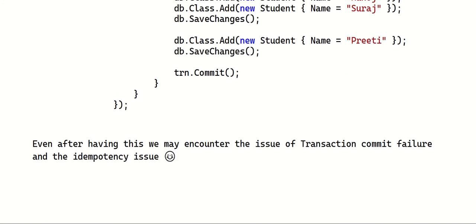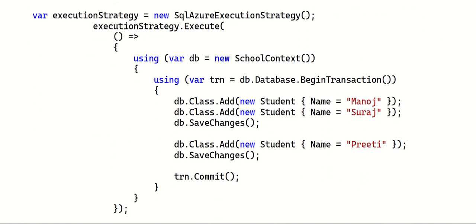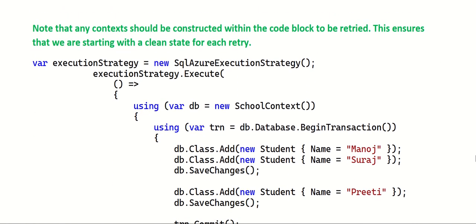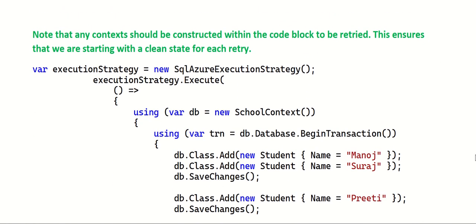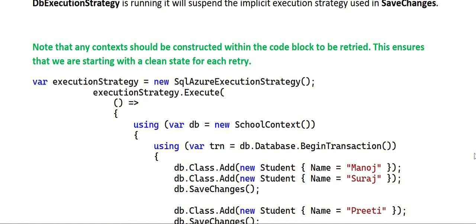There are still some challenges even after this — we may encounter transaction commit failure and idempotency issues. I'll explain how to avoid those commit failure-related issues in my next video. Thank you for listening — I hope you understood the various challenges when using the retry mechanism in Entity Framework Core. Have a nice day!